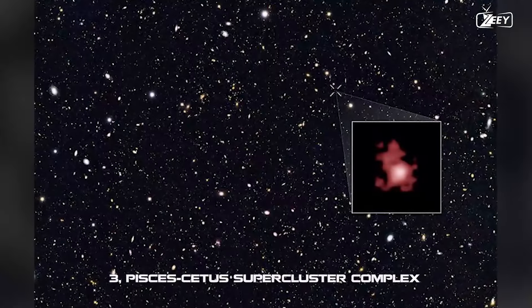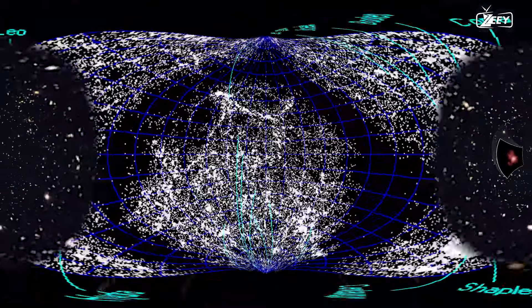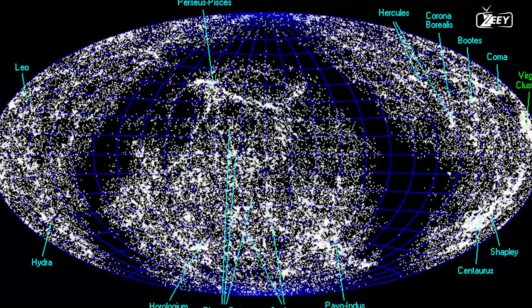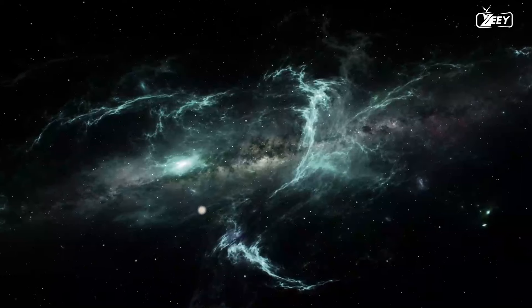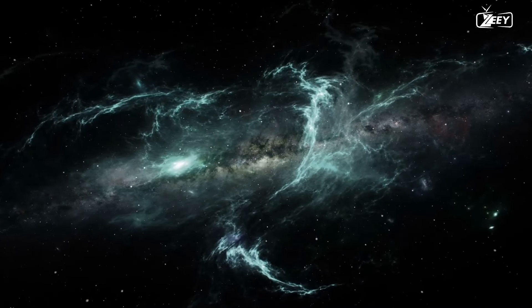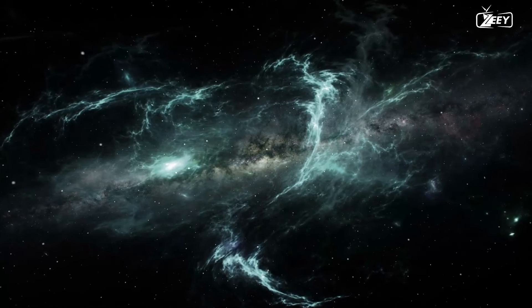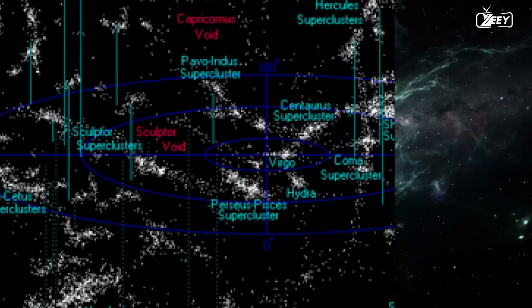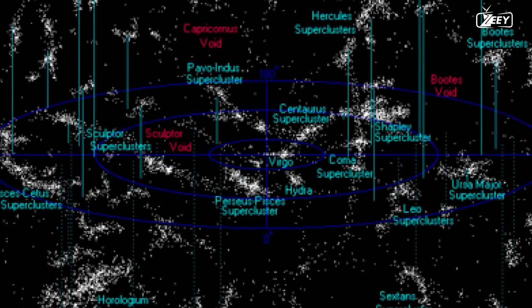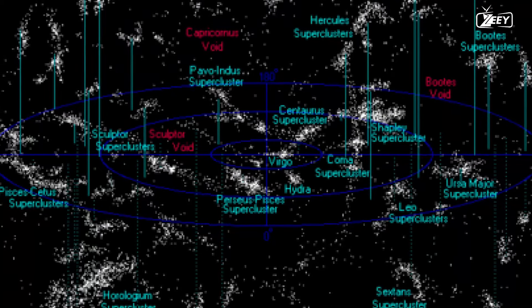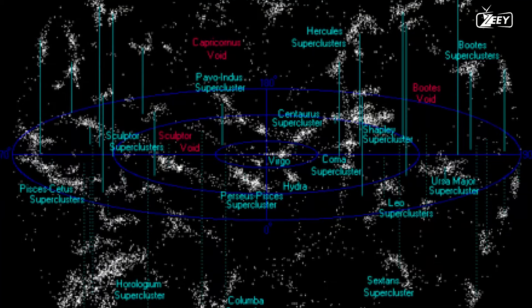Number 3. Pisces Cetus Supercluster Complex, 1 billion light years. There are five components that make up this complex, which spans 1,000 million light years. The Virgo Supercluster, which has 100 groupings of galaxies, including the Milky Way, is part of the Laniakea Supercluster. The Pisces Cetus Supercluster, from which its name derives, is represented by the other four sections, which are the Perseus-Pisces chain, Perseus-Pegasus chain, and Sculptor regions.